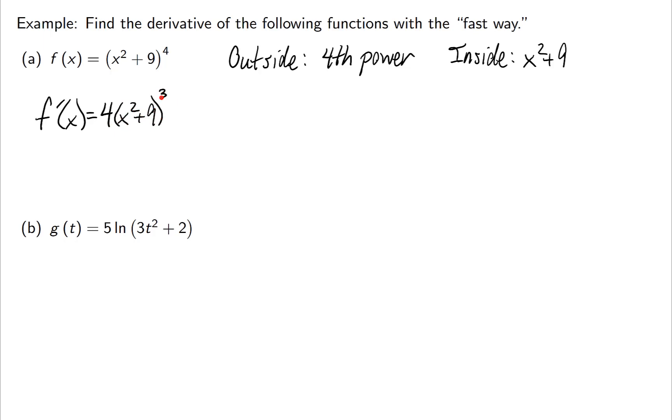So I'm going to leave my x squared plus nine as is, and then I'll subtract one from my power. I'm not finished yet, but this is the start. Again, I took the fourth power and brought it to the front and then subtracted one. And I just left the inside alone. Take the derivative of the outside and leave the inside alone.